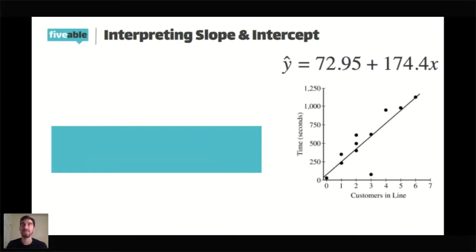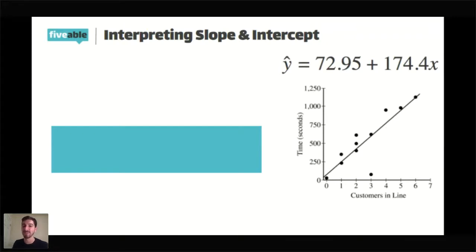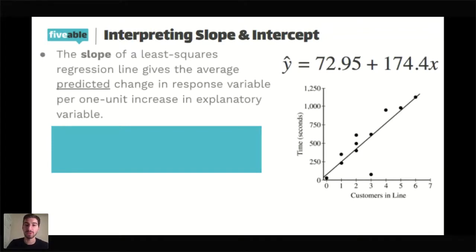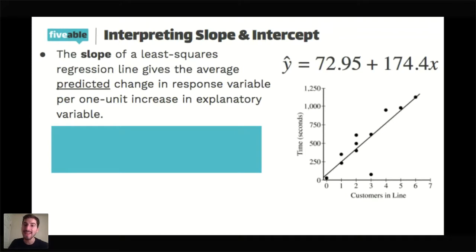Other parts of AP questions when it comes to regression often focus on interpreting the slope and intercept. This new scatter plot came from a situation involving several different customers at a store, timing how long it took to check out based on how many people were in front of them in line. As you move along the x-axis, there's a pretty strong positive association — the more people in front of you, the longer it's probably going to take to check out. The test makers will ask you to interpret the meaning of the slope and intercept. The slope is the predicted change in the response variable per one unit increase in explanatory variable — just like slope as rise over run from algebra class.